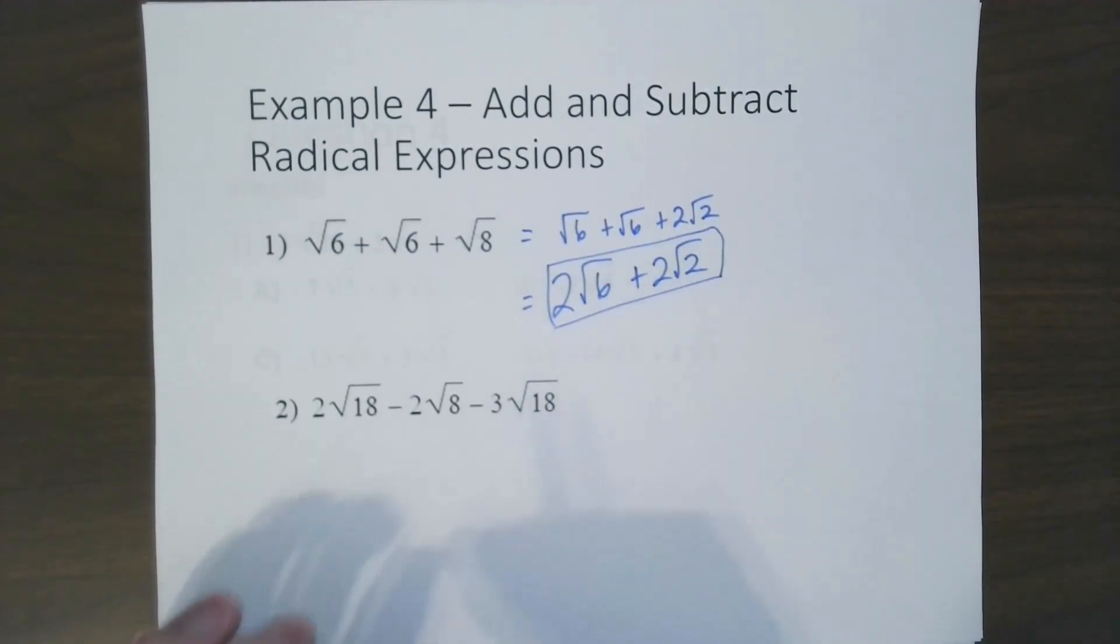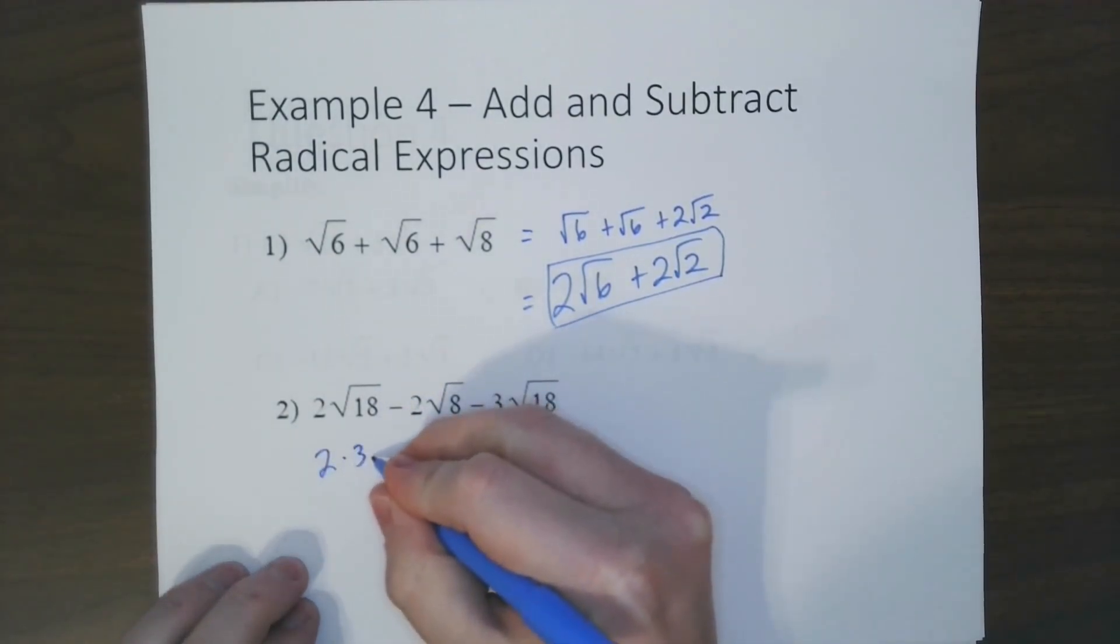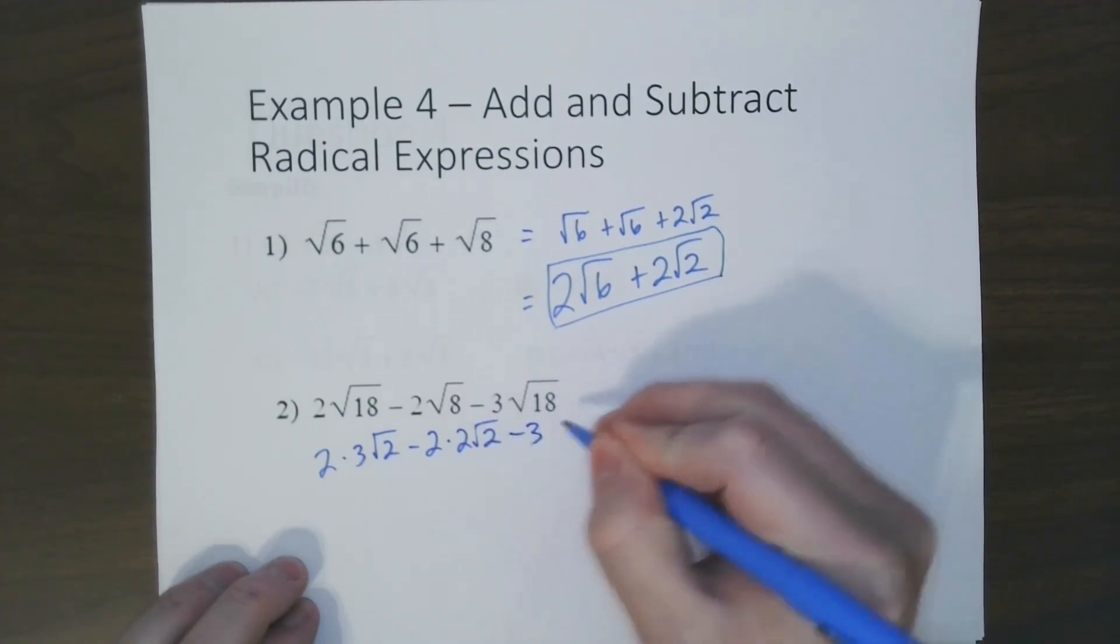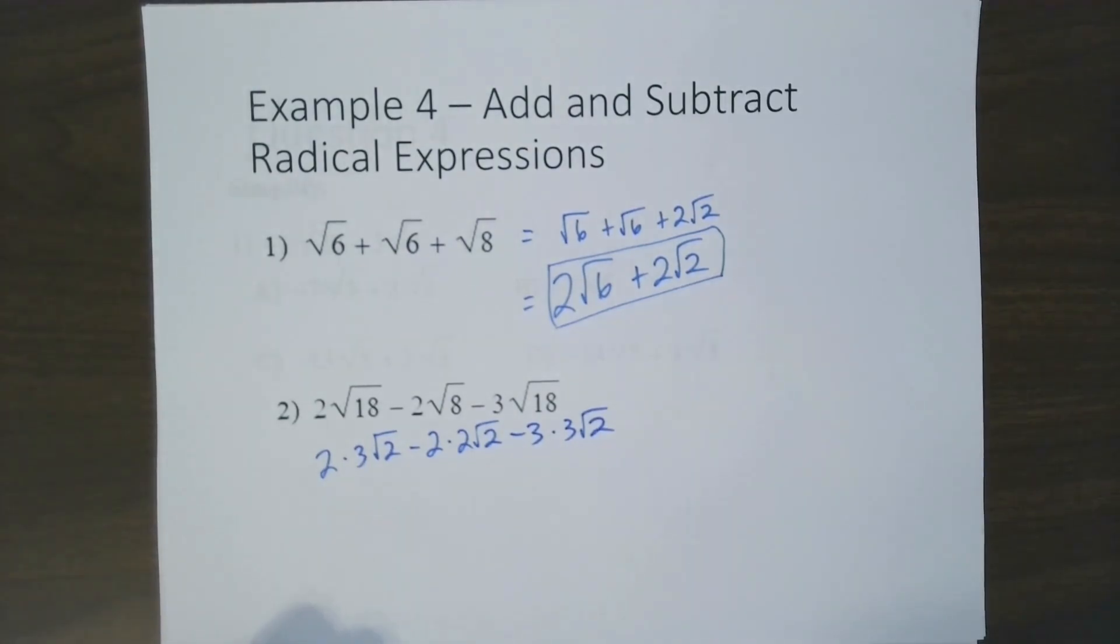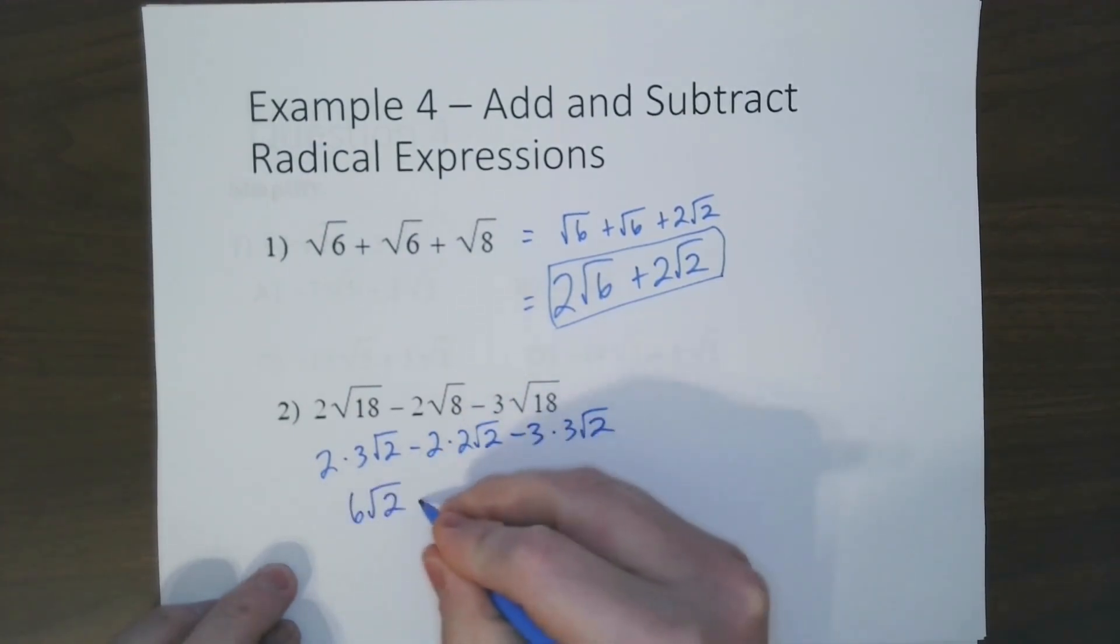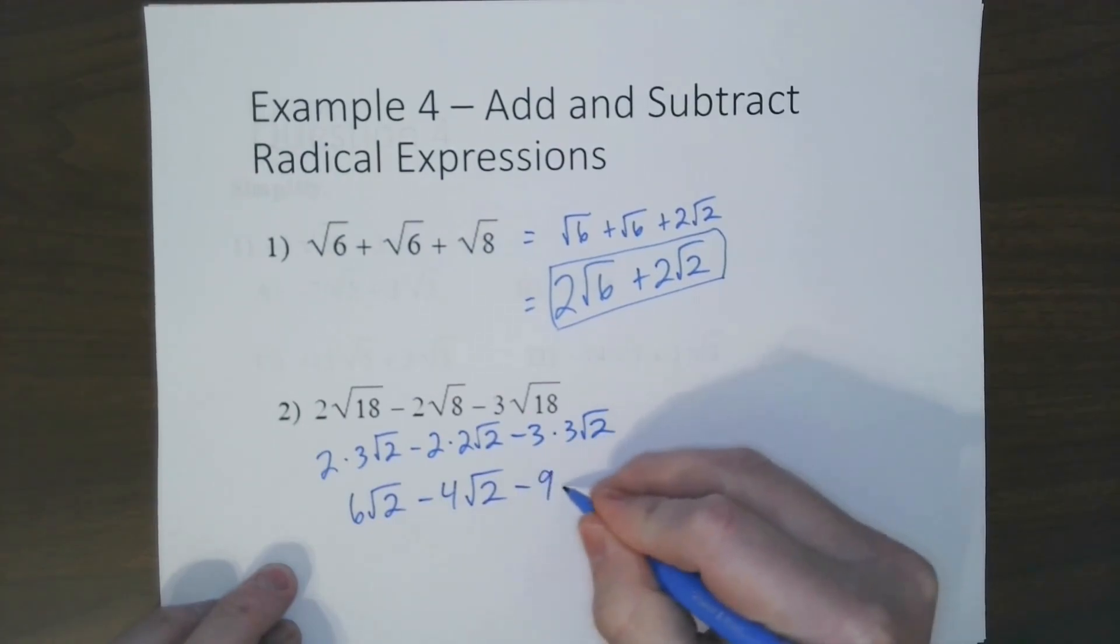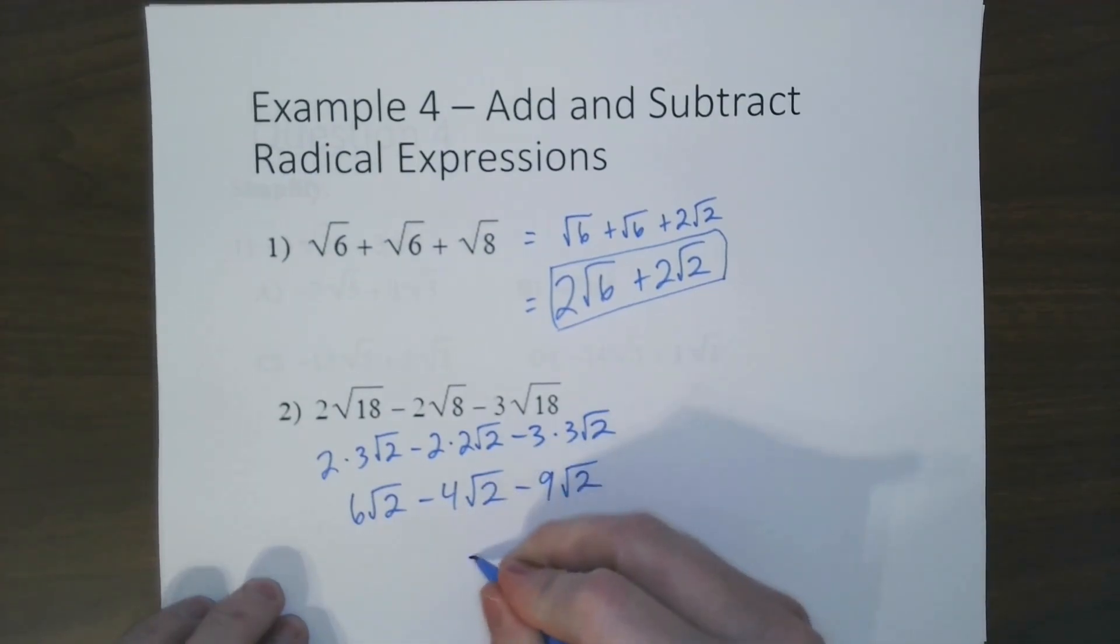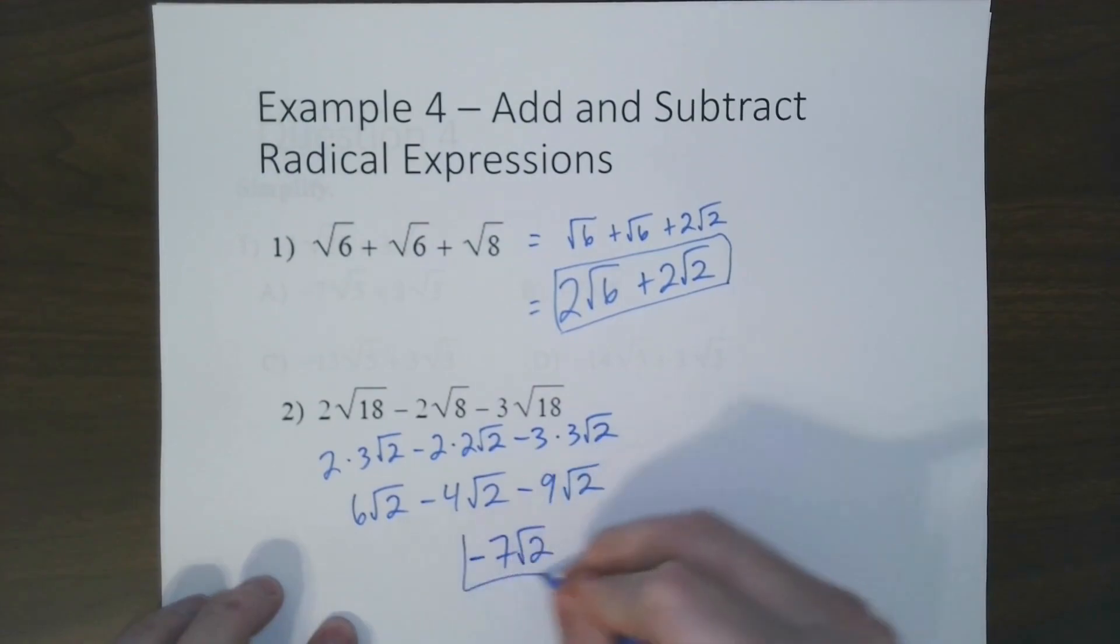With number 2, we're going to go through again and simplify. But there are coefficients, so we're going to have to take those into account. So we get 2 times 3 radical 2 minus 2 times 2 radical 2 minus 3 times 3 radical 2. Now with all these coefficients, notice I left them. So we're going to multiply 6 radical 2 minus 4 radical 2 minus 9 radical 2. And from here, all we have to do is deal with the coefficients. So 6 minus 4 is 2 minus 9 is negative 7 radical 2. And that is our answer.